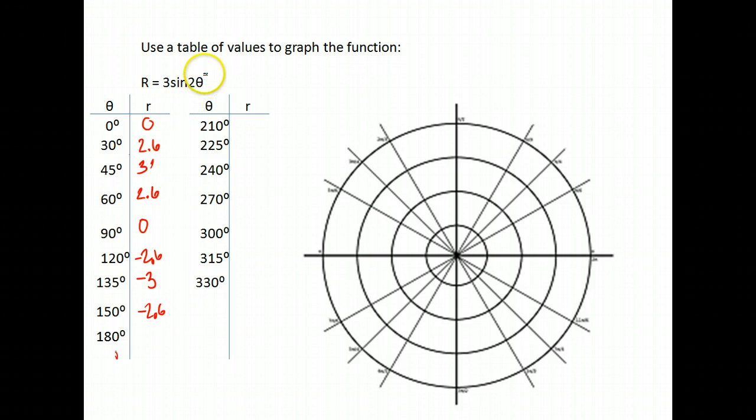180. 2 times 180 is 360. The sine of 360 is 0 times 3 is 0. And notice my values, for the most part, are just being repeated.